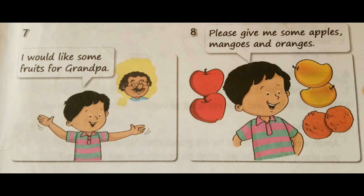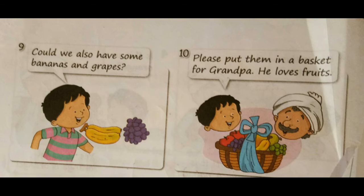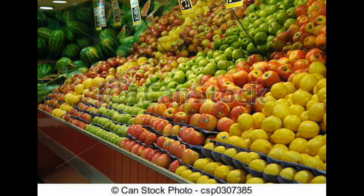After identifying different types of fruits, Amman is now ready to buy fruits for his grandpa. In point seven he says, 'I would like some fruits for grandpa.' In point eight he asks, 'Please give me some apples, mangoes, and oranges.' In point nine he says, 'Could we also have some bananas and grapes?' In point ten he says, 'Please put them in a basket — grandpa loves fruits.' Finally, Amman bought different fruits to celebrate grandpa's birthday.